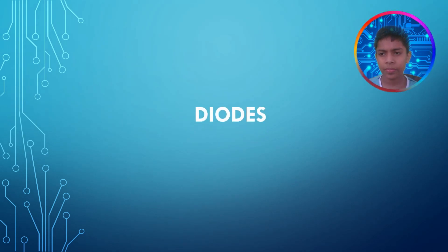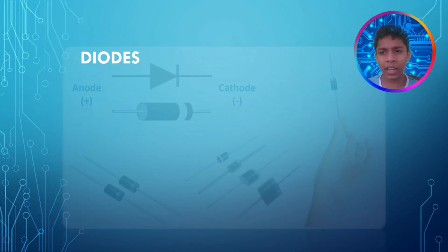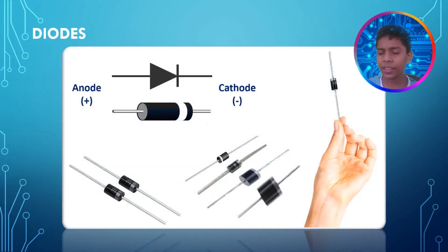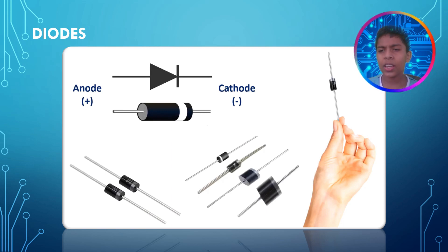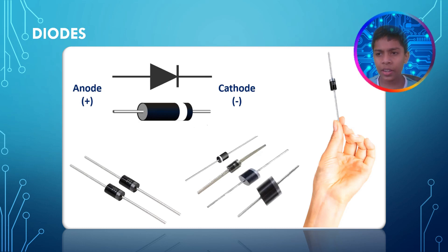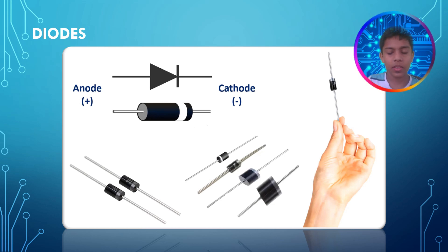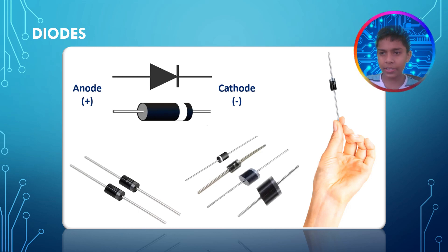The next component we are talking about is diodes. Diodes are used to make the current flow only in one direction. There are two parts in a diode: the first one is anode and the second one is cathode. The international symbol for a diode is shown, as well as the real diode. There is a white line on the diode to identify which side is which.